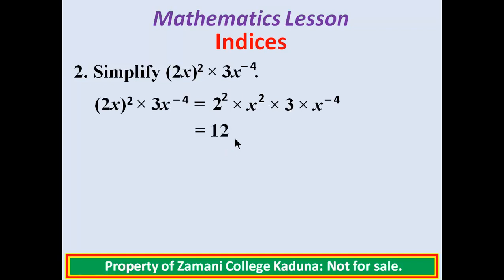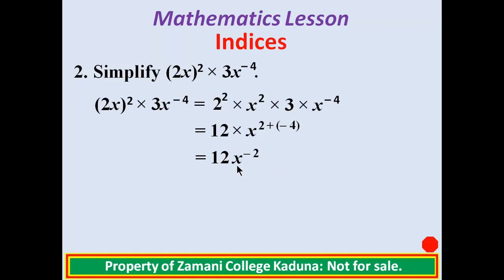So we have 12 times x raised to the power of 2. Because of this multiplication we add negative 4, giving 12x raised to the power of 2 plus negative 4. That is the same as 2 minus 4, and 2 minus 4 is negative 2. So our final answer is 12x raised to the power of negative 2.